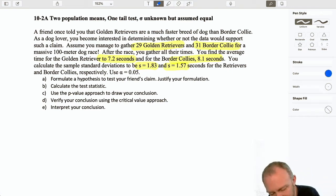You find the average time for the golden retriever is 7.2 seconds. For the border collie, it was 8.1 seconds. We have our sample standard deviations, 1.83 and 1.57. I can determine by looking at the problem that this is a test on two populations, because my problem is describing for me two samples. I know that it's going to be a t-test, because of course, it's telling me that we're working with the sample standard deviations.